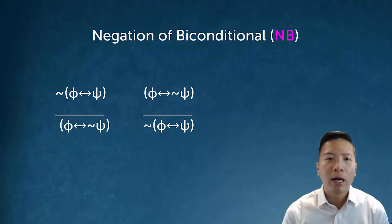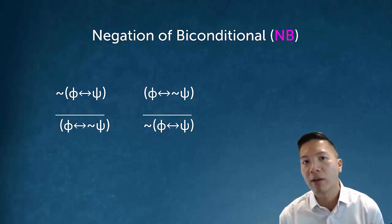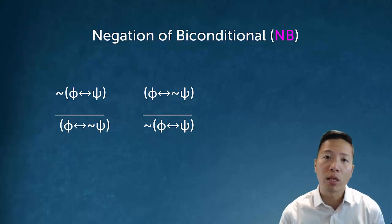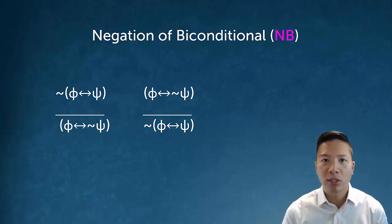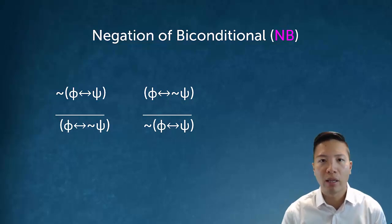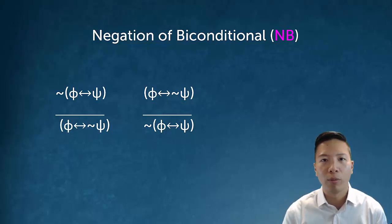You might wonder: why can't I infer not phi biconditional psi? I just need to move the negation to one of them — why does it have to be the psi? Actually, this is totally arbitrary and dictated by convention alone. Our system's negation of biconditional rule moves the negation to the right side of the biconditional, and we cannot make exceptions. So although that is a little silly, we just have to stick to the rules.